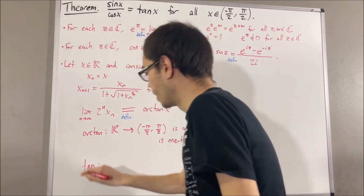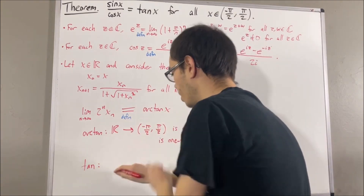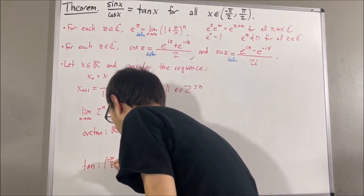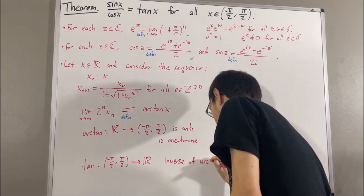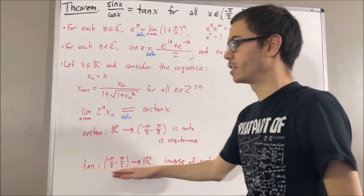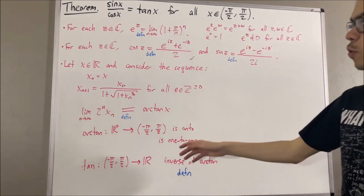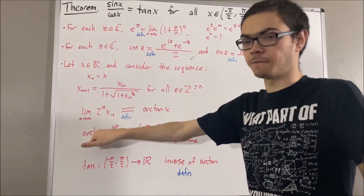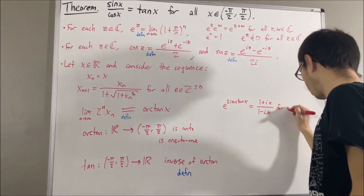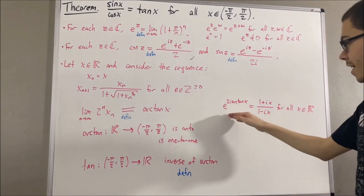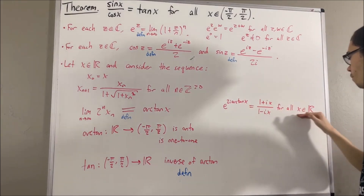Since tangent is the inverse of the arctangent function, the domain and range get swapped. So tangent is a function from the open interval negative pi over 2, comma pi over 2, to the real numbers. This is our definition of tangent. Next, a property we proved involving the exponential function and the arctangent function is: e to the 2i arctangent x is equal to 1 plus ix over 1 minus ix, for all real numbers x.